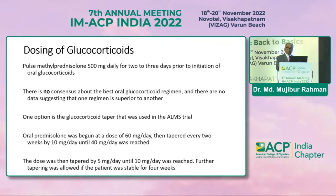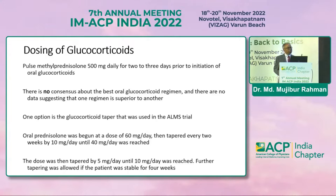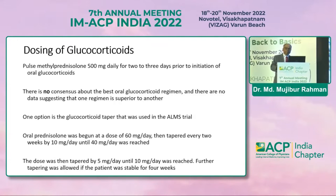Pulse methylprednisolone has become the standard of treatment — initiation with 3 pulses, usually 500 mg to 1 g daily for 3 days, followed by reduction to oral prednisolone at 1 mg per kg per day. Subsequently, some literature has proposed 0.5 mg per kg per day, gradually reducing to a maintenance dose.